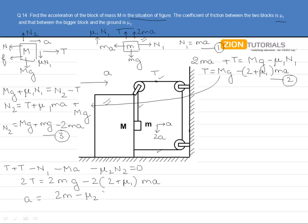acceleration equals [2m minus μ2(M + m)]g over [(M + m)(5 + 2μ1 - μ2)], giving us the answer for this question.